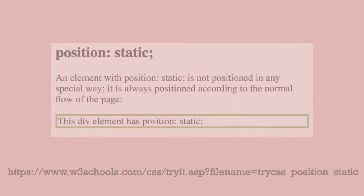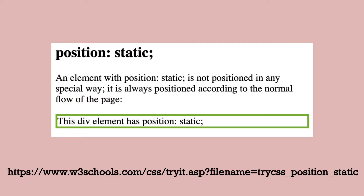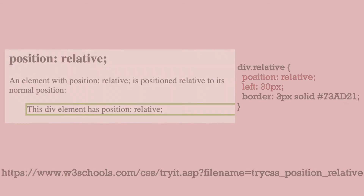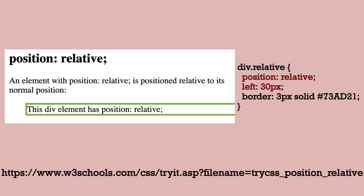The position property can also be used to take elements out of their normal flow. All elements in normal flow have a position property value of static, meaning they display one after the other and if you scroll they scroll with the page. Position relative changes this flow.